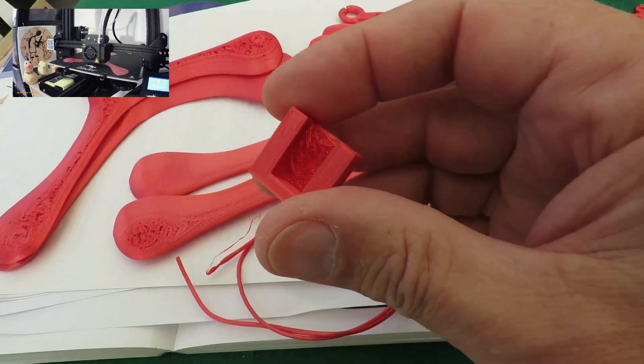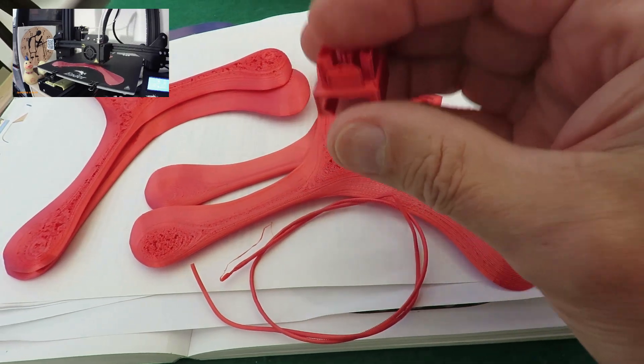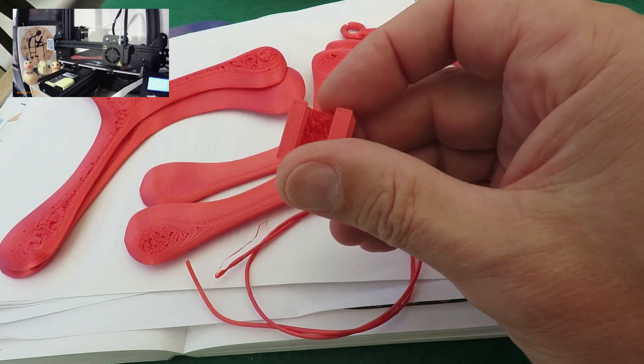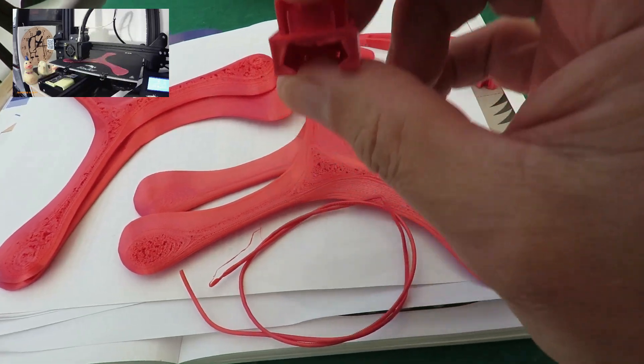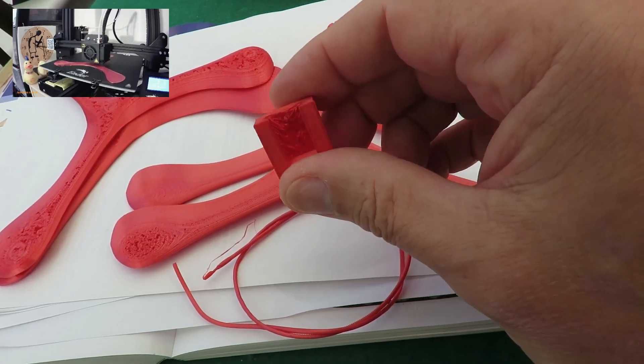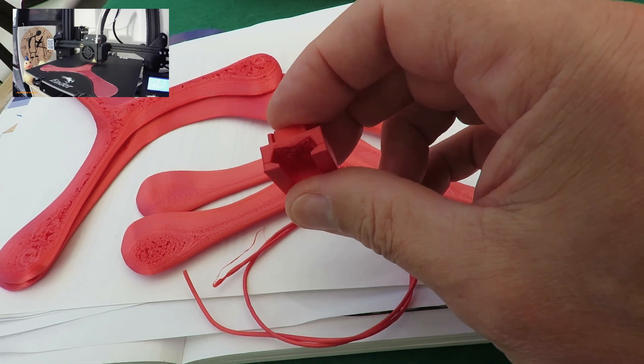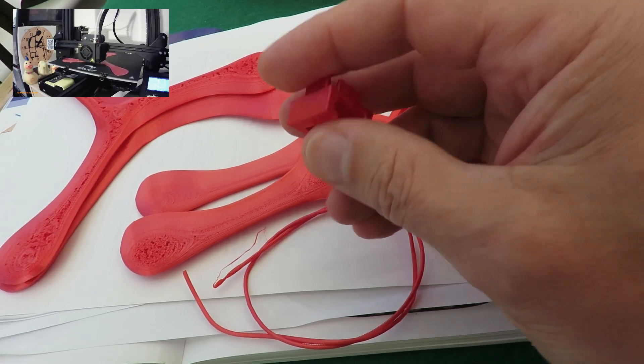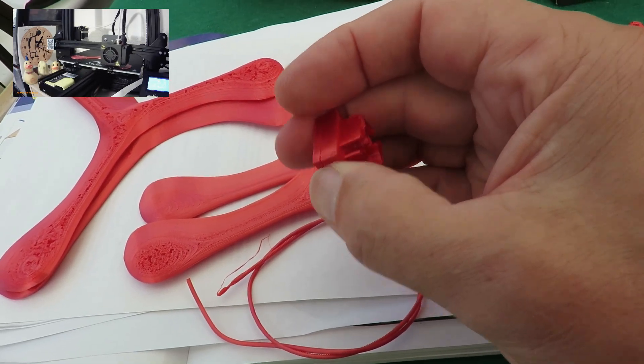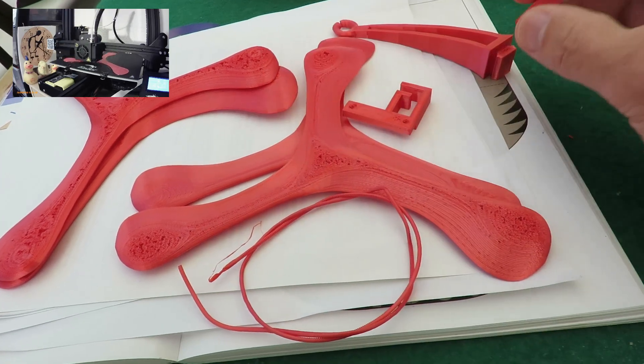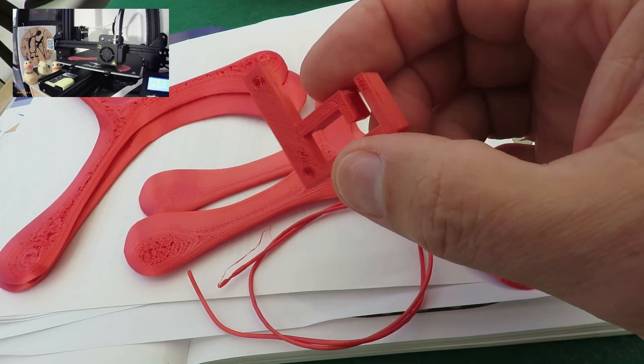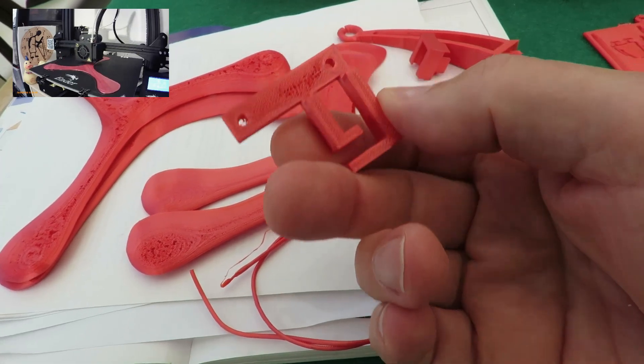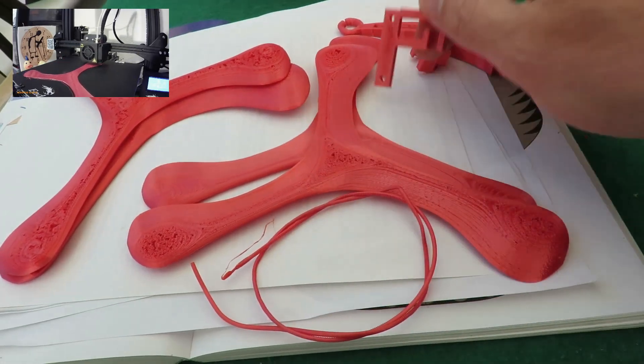That one looks a bit funny on the inside but that's because it was printed that way up so there was nothing to support that sort of roof there. Probably should have printed it with support. And it's split because I pushed it on there. That one's got a few holes in it. Generally looks okay.